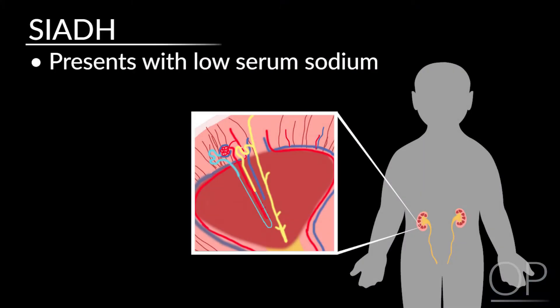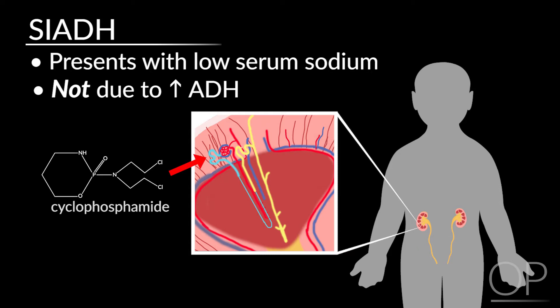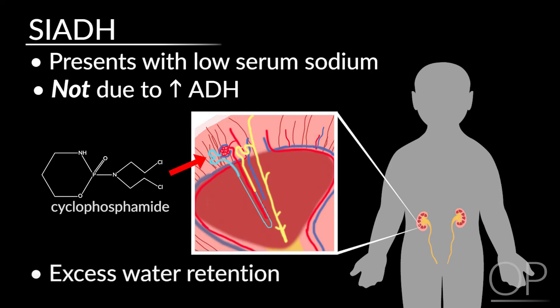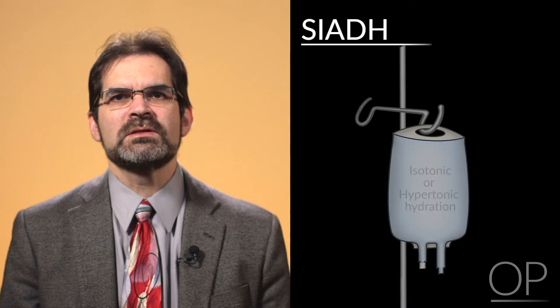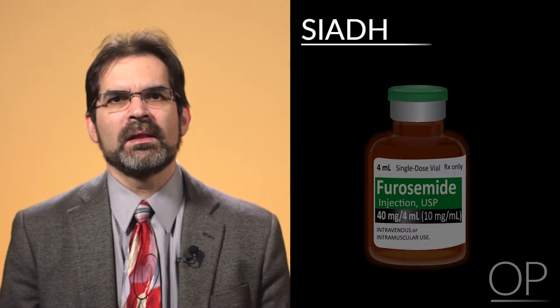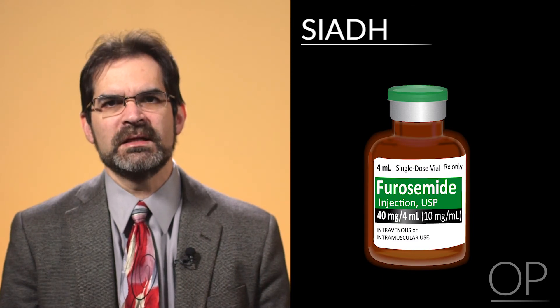SIADH associated with cyclophosphamide is actually not due to increased antidiuretic hormone. The direct effect of cyclophosphamide on the renal tubules is not entirely clear, but it leads to excess water retention and is typically a short-lived problem. Management is to give isotonic or hypertonic hydration, which is usually helpful. Lasix can also be used for a patient with fluid retention. In severe cases, bladder irrigation may be necessary to manage potential hemorrhagic cystitis without affecting intravascular water retention — since cyclophosphamide continues collecting in the bladder, it must be flushed out if the patient is not excreting urine on their own.